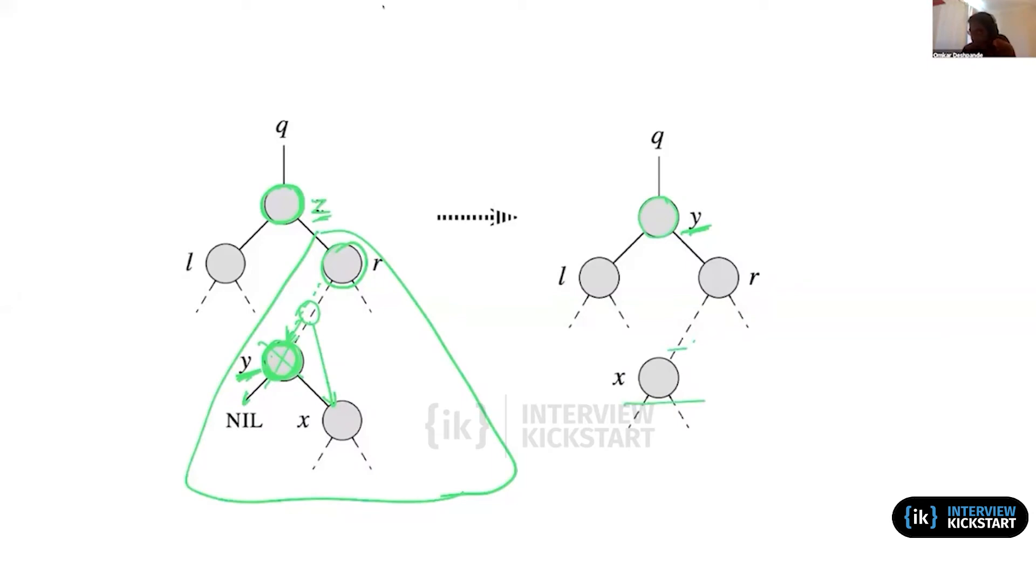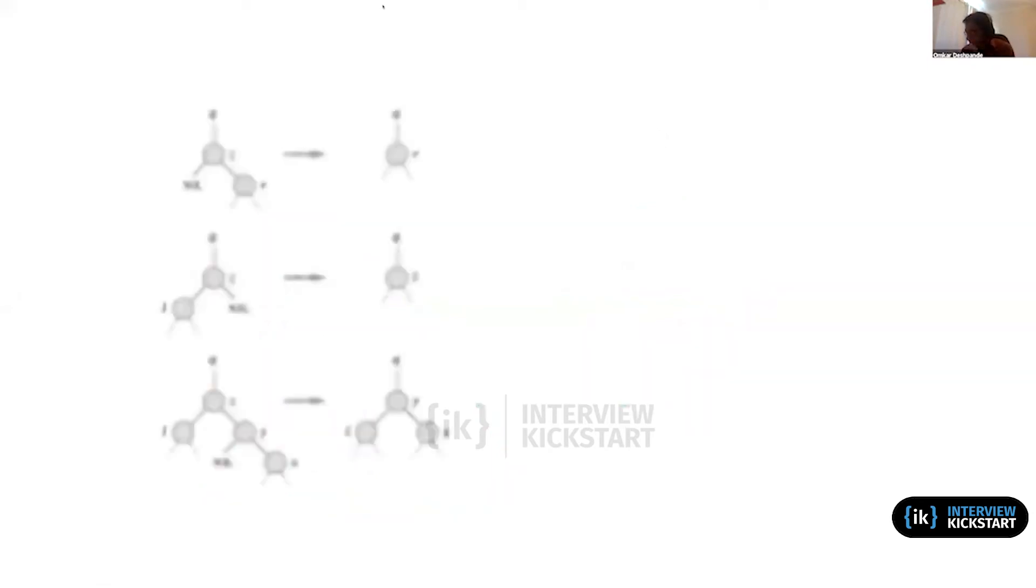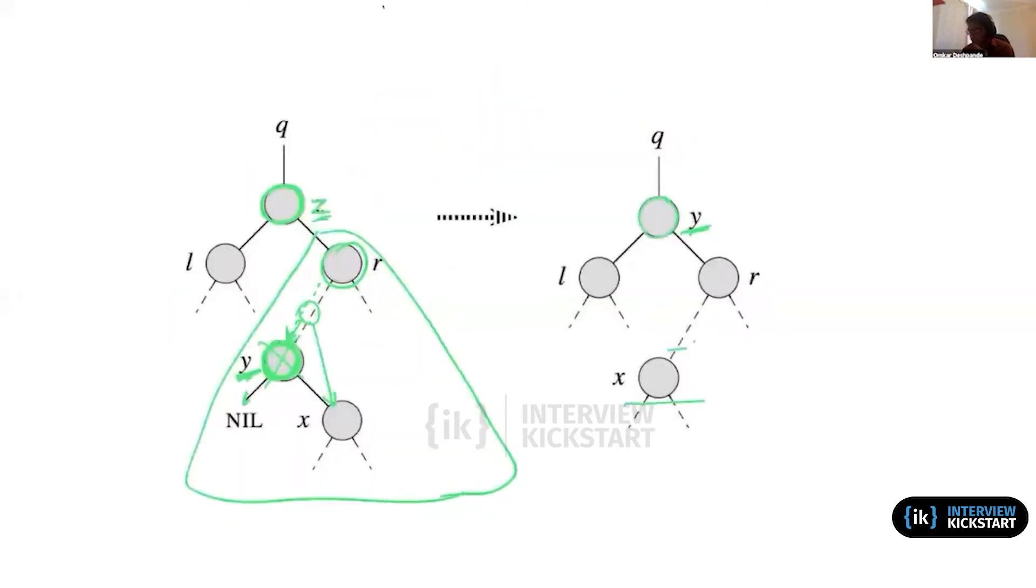Now, all of these operations—insert, delete, and search—they take no more than order of the height of the tree in terms of their time complexity, because we just go down the tree once. Even if we find the node to be deleted somewhere in the middle, to find the successor, we would keep going down one of the subtrees of that node.